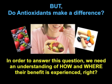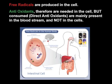Do antioxidants make a difference in the free radical equation? The answer is yes, they do. But we have to understand how and where they work. Free radicals are produced in the cells, so antioxidants are needed within the cell. But when we consume direct antioxidants, they're mostly present in the bloodstream and not within the cell. So we have to look for a different solution.